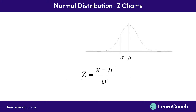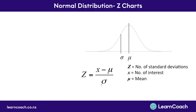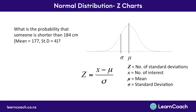To understand what this formula is all about: z is just the number of standard deviations, x is the number of interest that we're trying to find, mu (μ) is the mean, and sigma (σ) at the bottom is the standard deviation. You'll get given these values if you need to work out a z-score, so that you can plug them into this formula. So if we were given a question — what is the probability that someone is shorter than 184 cm if the mean is 177 and the standard deviation is 4 — we can use our formula to do this.